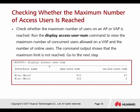Check whether the maximum number of users on an AP or radio has been reached. Run 'display access user number' command to view the maximum number of concurrent users. This command shows how many users are already connected and the maximum number that can connect. The maximum user count for radio 0 (2.4 GHz band) is 512, and for the 5 GHz band is also 512. Currently only 10 users are on one band and 3 on the other.